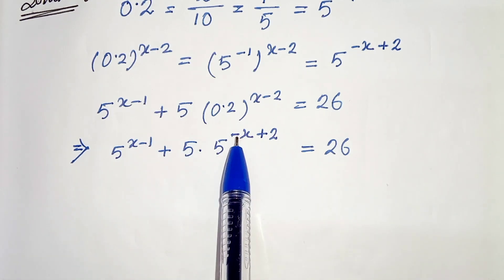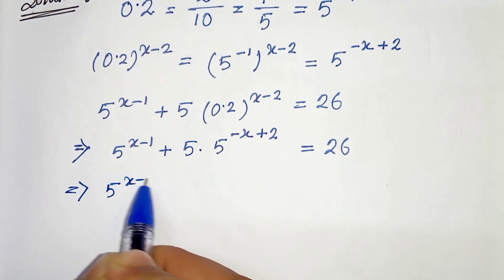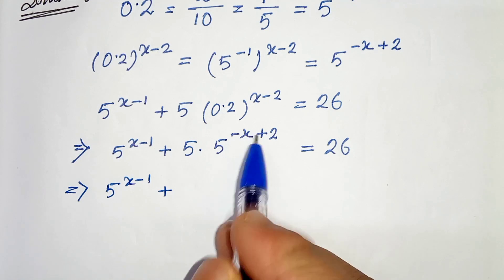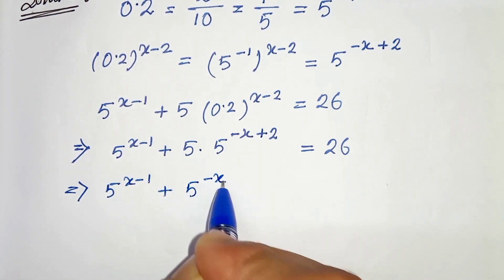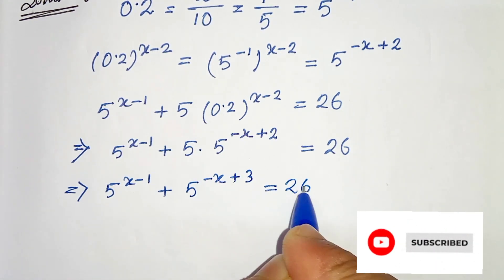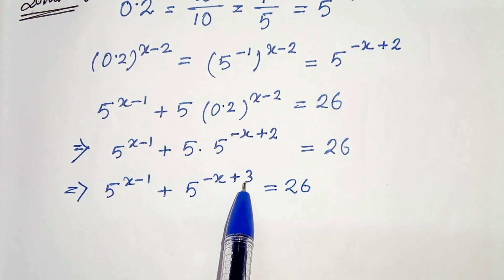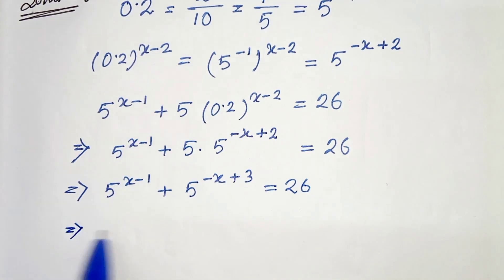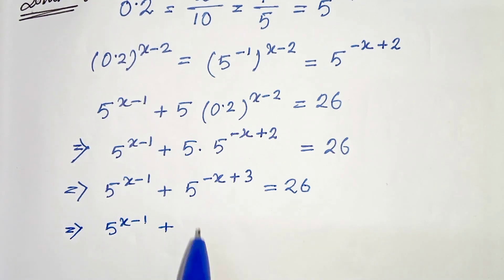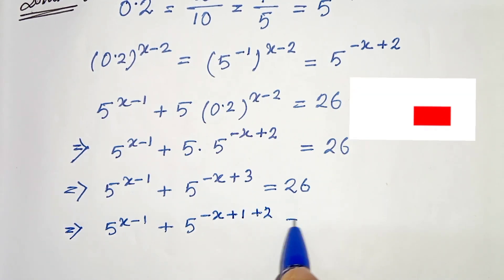In the next step, this is 5 to the power 1 and this is 5 to the power minus x plus 2, so we will get 5 to the power x minus 1, plus 5 to the power minus x plus 3 — since minus x plus 2 plus 1 is minus x plus 3 — equals to 26.